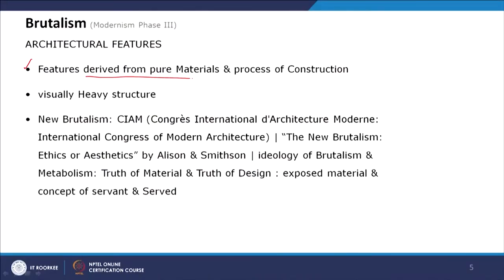From brutalism, a neo-brutalist movement started where brutalism blended with metabolism. We will discuss metabolism and then neo-brutalism. The visual features of brutalism: it started with material, but has a visual principle — features derived from the pure material and the process of construction will be visible. The pure material — whether concrete, brick, or stone — will be visible. This purity of material comes from the internationalist movement where pure colour and pure material were very important.